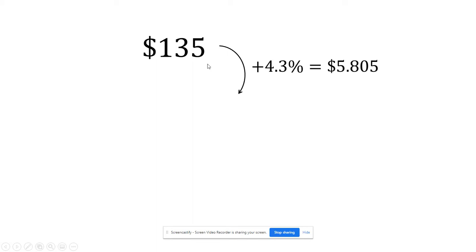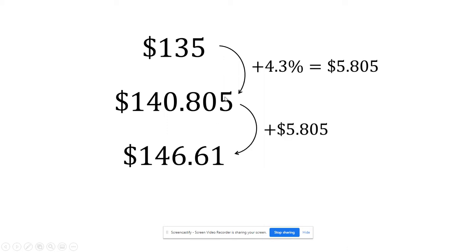And then we add that to the P, and we get $140 and about 81 cents. So for the next year, we're going to do the same thing. We're going to add 4.3% of $135, so it's still $5.81, approximately. And so that gives us a new total of $146.61. And then we're going to add that amount again.